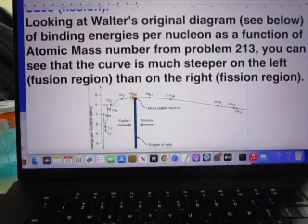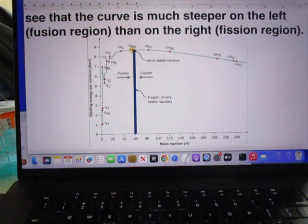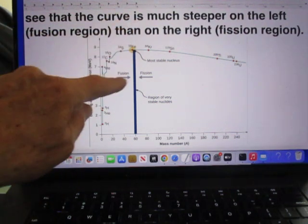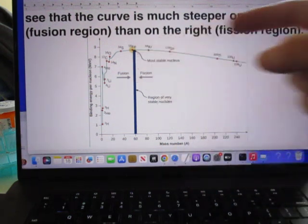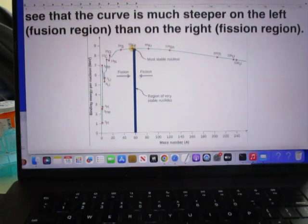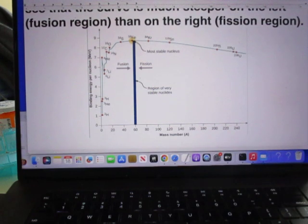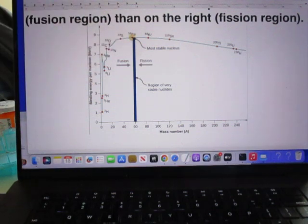Looking at Walter's original diagram, see below, of binding energy per nucleon as a function of atomic mass number of problem 213, you can see that the curve is much steeper on the left side, which is here, which is the fusion area, than on the right side, which is here, which is the fission area. So fusion in general gives more energy than fission. Because look, incredible increase of binding energy per nucleon compared to this.